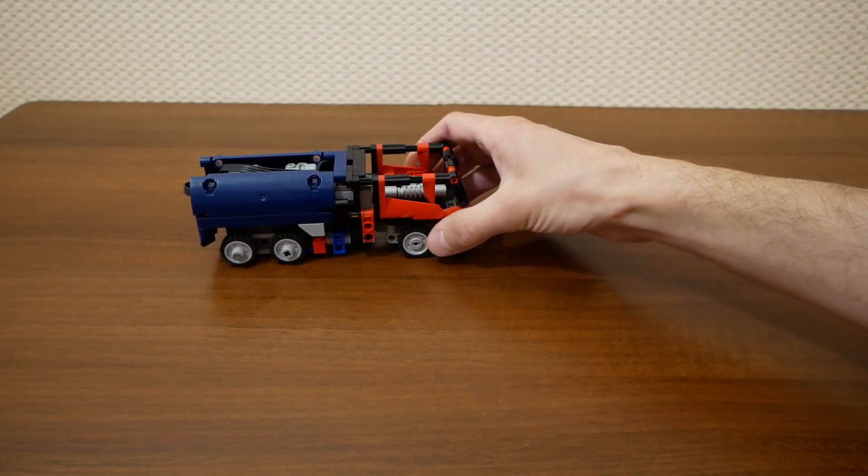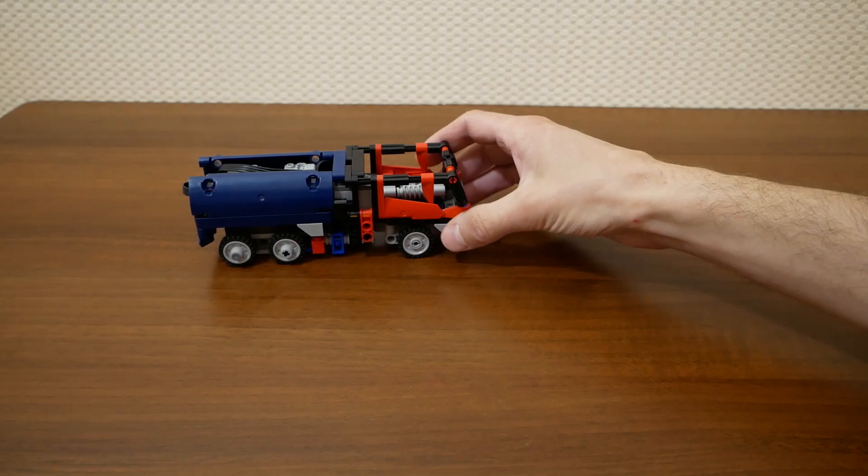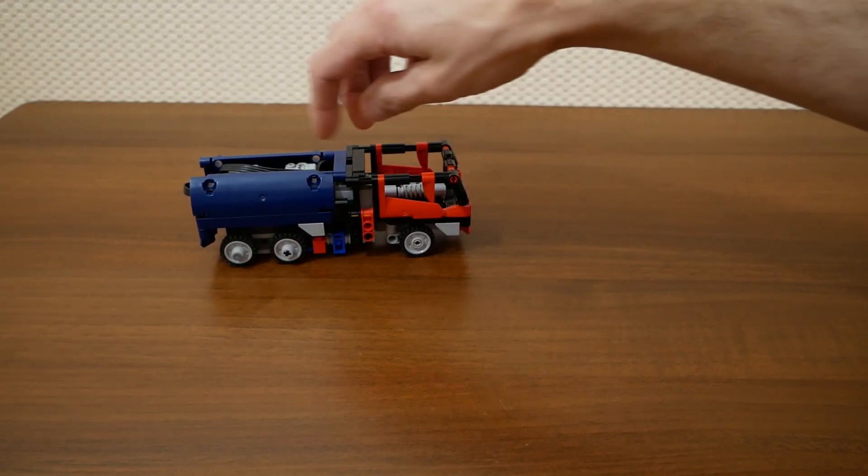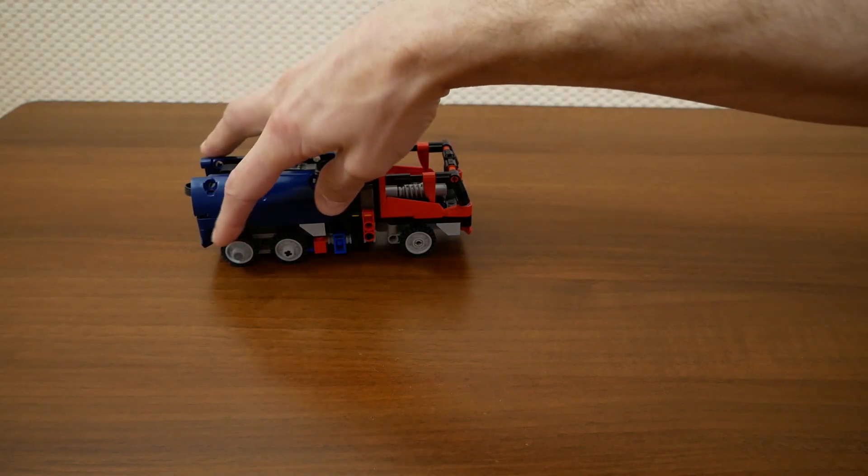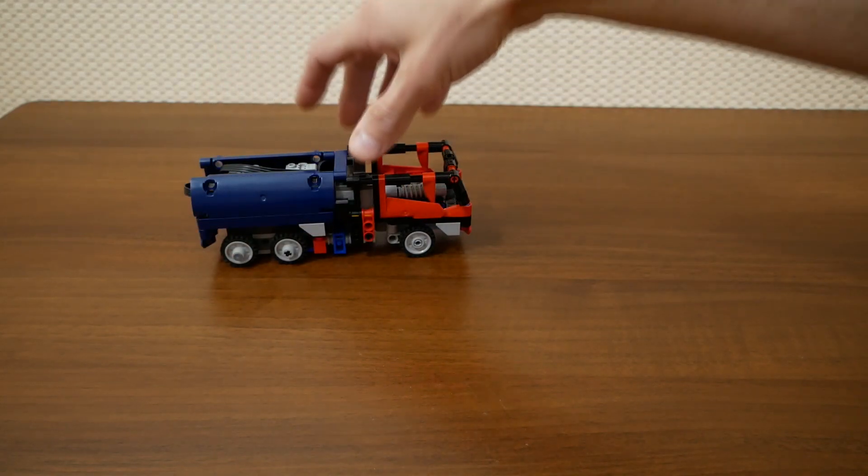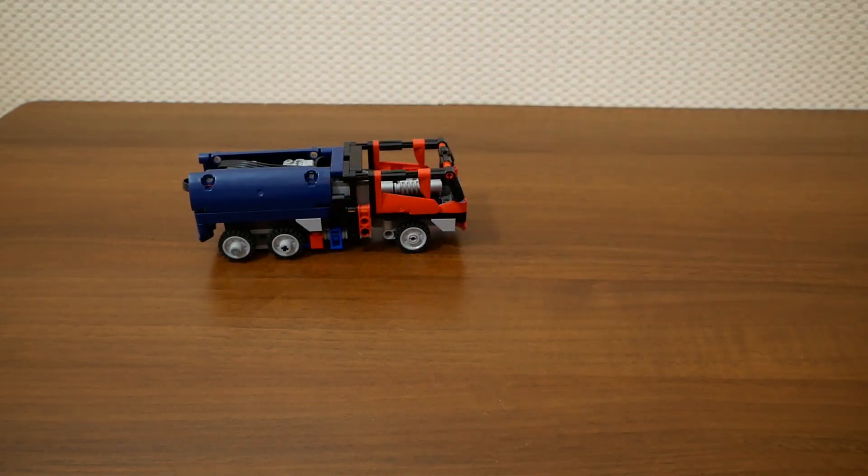This model could have better maneuverability if we, for example, remove the last axle, make the model shorter. Because the longer the model, the bigger the turning radius.